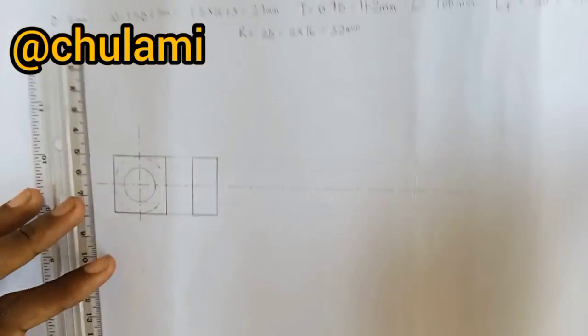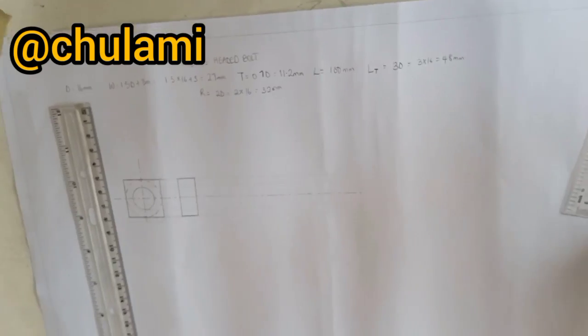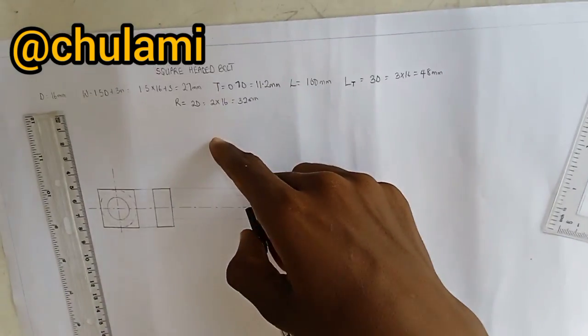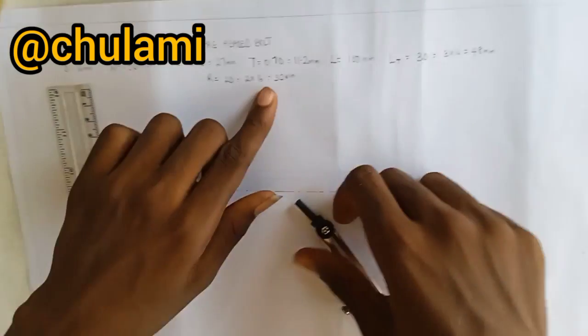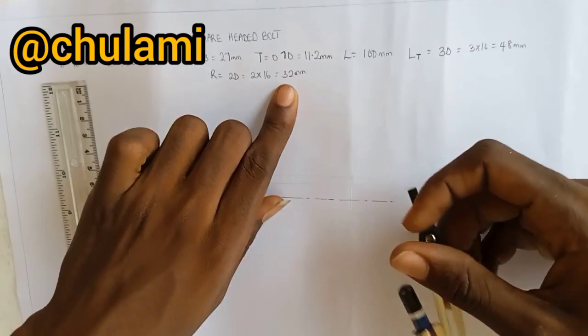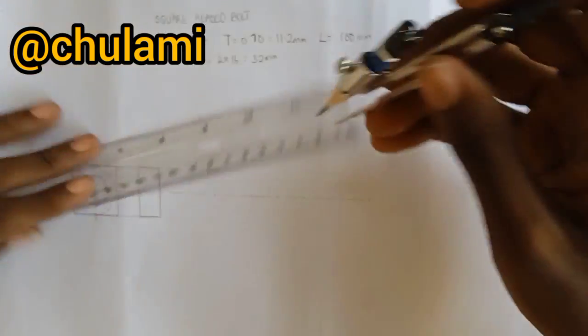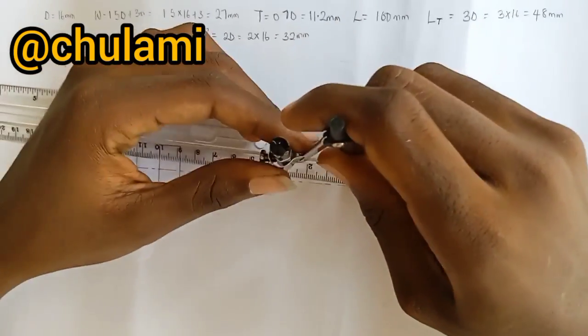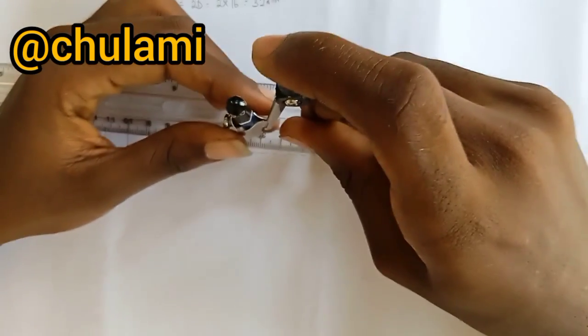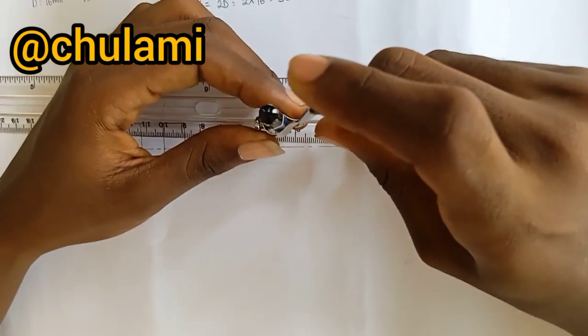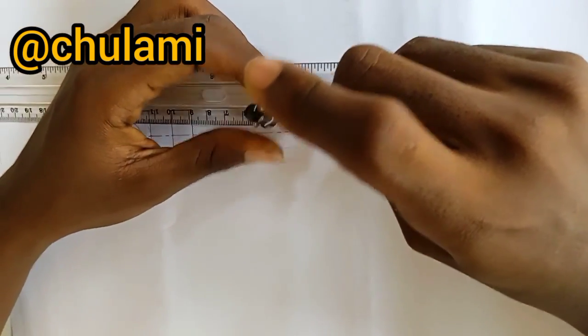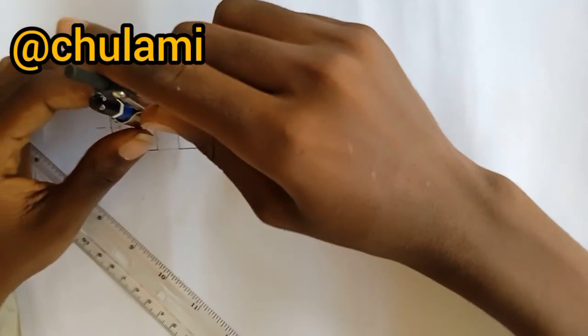Now, having done this, next thing we're going to do, from our parameter, we're given that the radius of the chamfer is 32mm. So with our compass, measure our 32mm. This is 32mm.